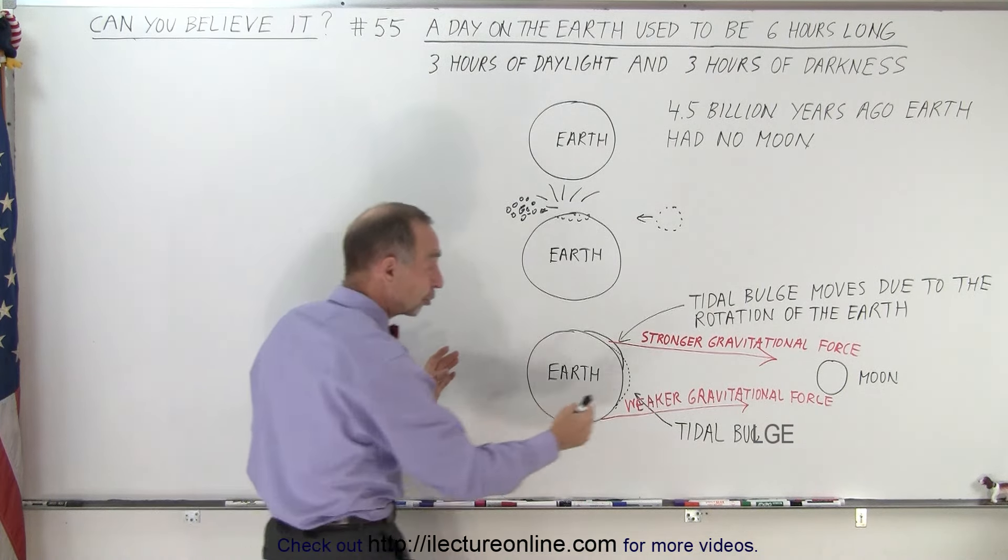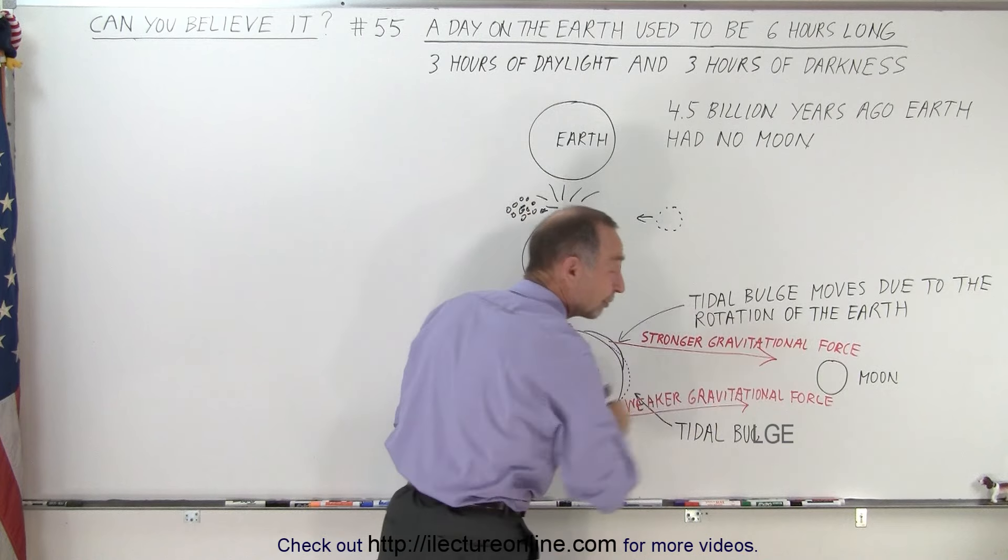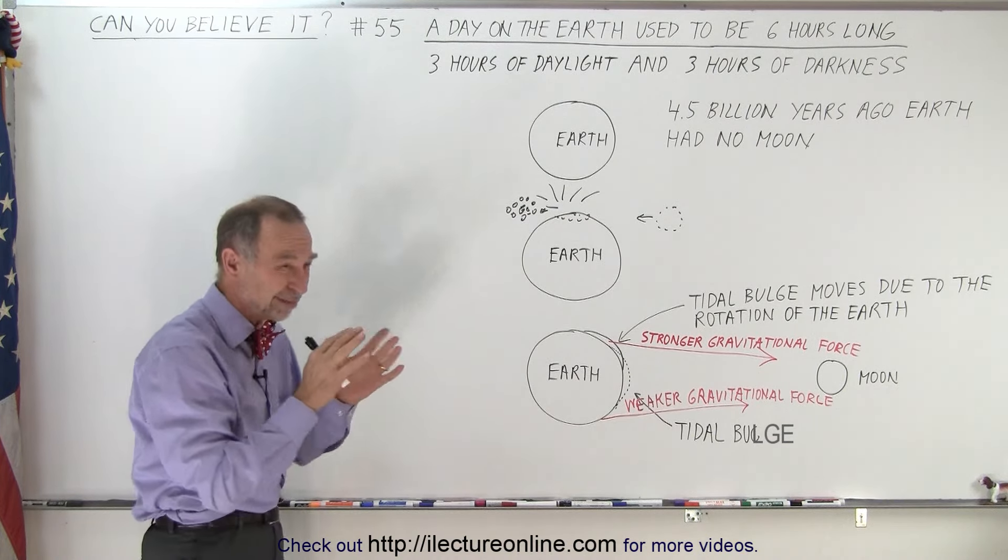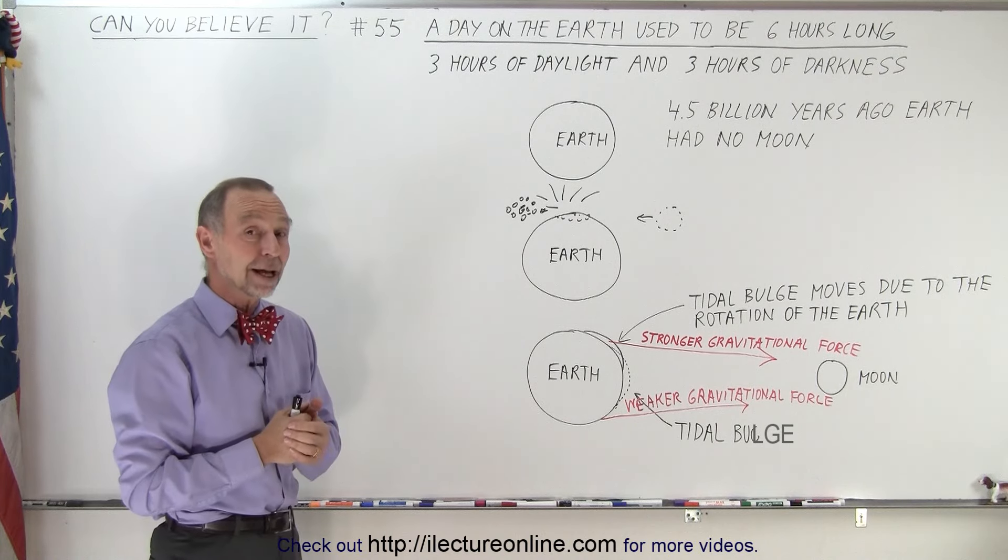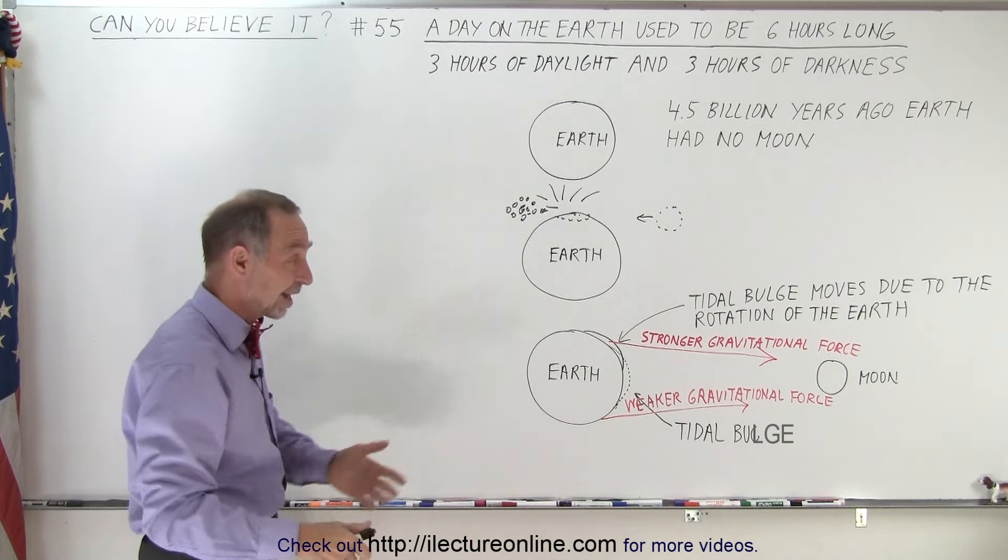The moon used to be much closer to the earth and over time has moved further and further away, and it's continuing to move further away at about 2 or 3 centimeters per year. It may not seem like a lot, but over billions and billions of years, it adds up.